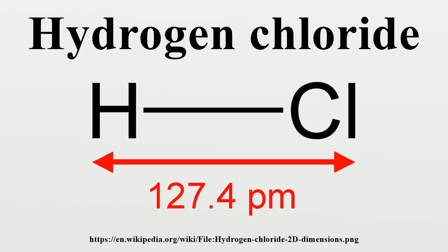Most hydrogen chloride produced on an industrial scale is used for hydrochloric acid production. In direct synthesis in the chloralkali industry, brine solution is electrolyzed producing chlorine, sodium hydroxide, and hydrogen. The pure chlorine gas can be combined with hydrogen to produce hydrogen chloride in the presence of UV light: Cl2 + H2 → 2HCl. As the reaction is exothermic, the installation is called a hydrogen chloride oven or hydrogen chloride burner.